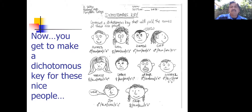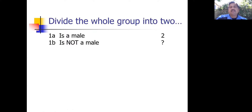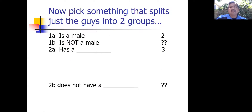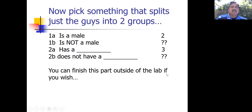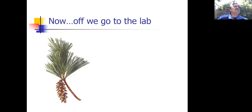You keep going until you have each person's name appearing once and only once in this column. Right now you have numbers, but eventually you keep going and you're going to get the names of all 10 people. So finish that up — that's part one of the lab.